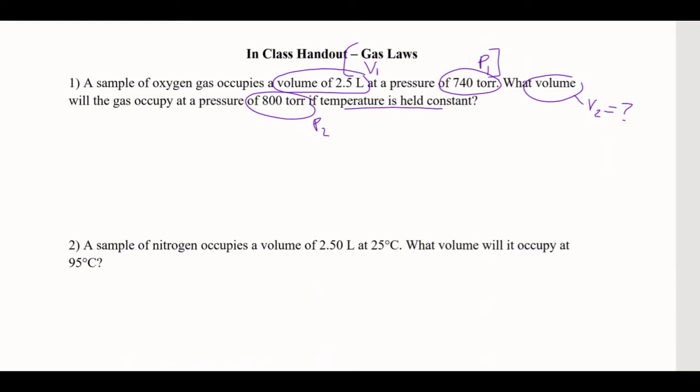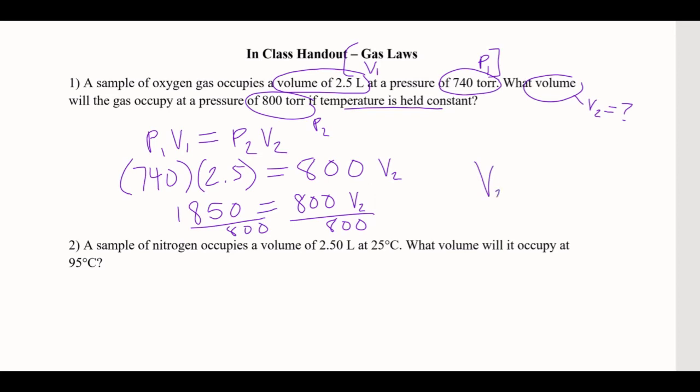So we're going to take P1V1 is equal to P2V2. And we're just going to plug in numbers here. So the pressure is 740 torr. V1 is 2.5. P2 is at 800. And then V2. So this is just algebra. This is just like the physics unit we had. We just have to solve this. So we're going to multiply 740 by 2.5 on the left side there. And that's going to give us 1850. And that's going to equal 800V2. We got to get the V by itself. So divided by 800. So V2, which is like second volume, is equal to 2.3 liters. And that's it.